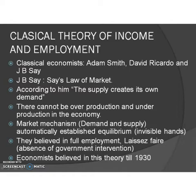Over-production and unemployment arise only in the short period. In the long run, the economy will automatically turn towards full employment when the demand and supply of goods become equal. So when a producer produces goods and pays wages to workers, the worker in turn buys those goods in the market.